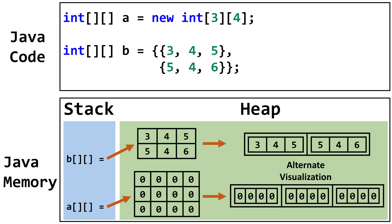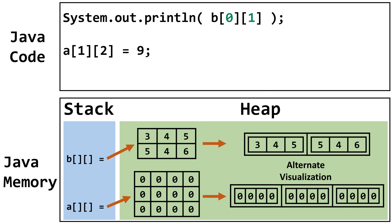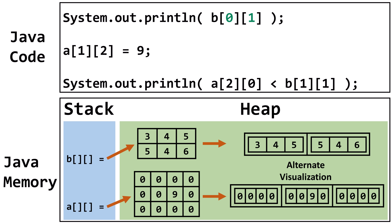Now that we've created a couple of two-dimensional arrays, let's access them. This line of code will print out the contents of the B array at row 0, column 1, and output the int 4. This line of code will assign the value 9 to the A array at row 1, column 2. This code will print the evaluation of the Boolean expression. Array A at row 2, column 0 is 0. Array B at row 1, column 1 is 4. The expression 0 is less than 4 evaluates to true.